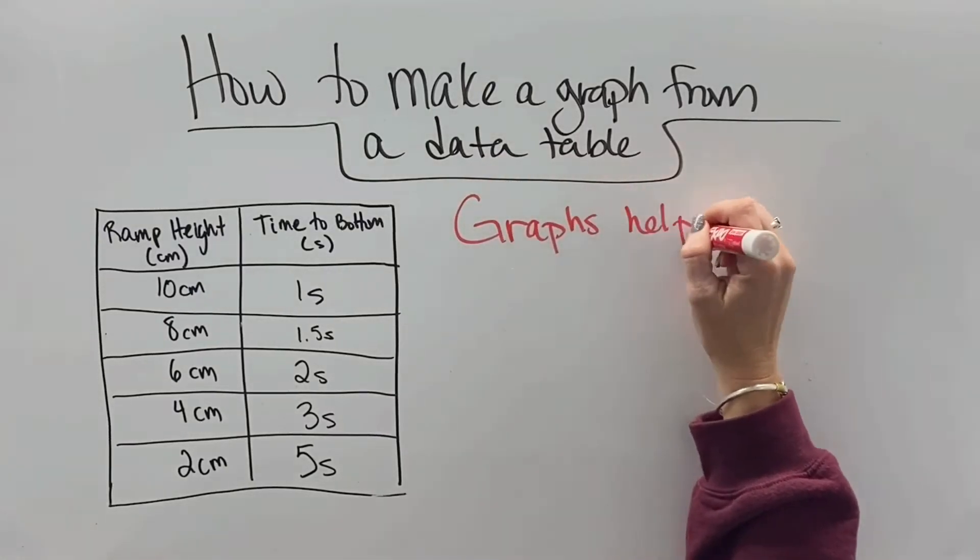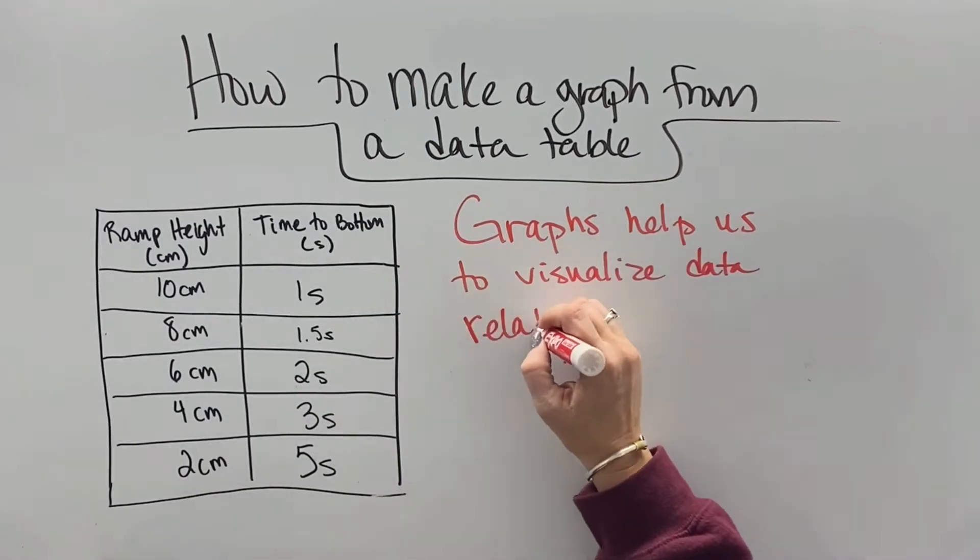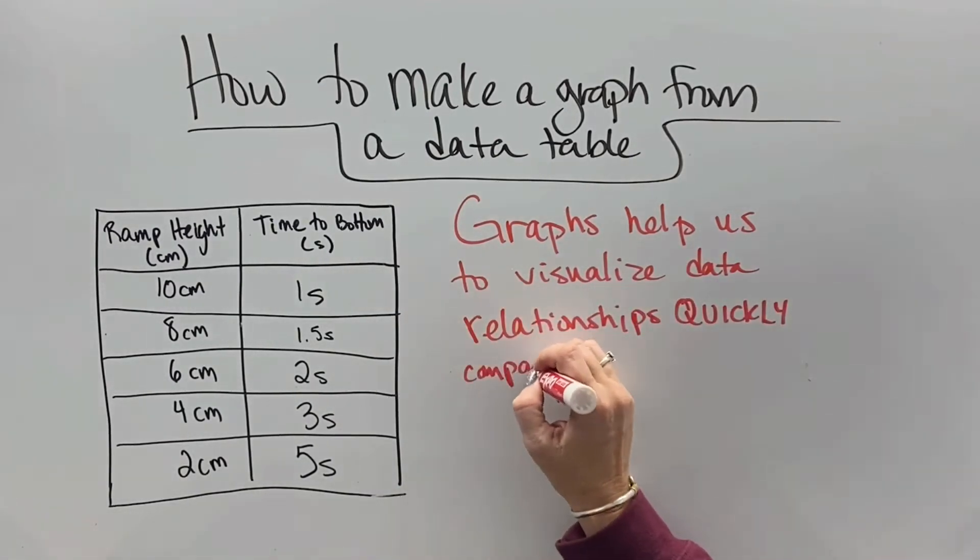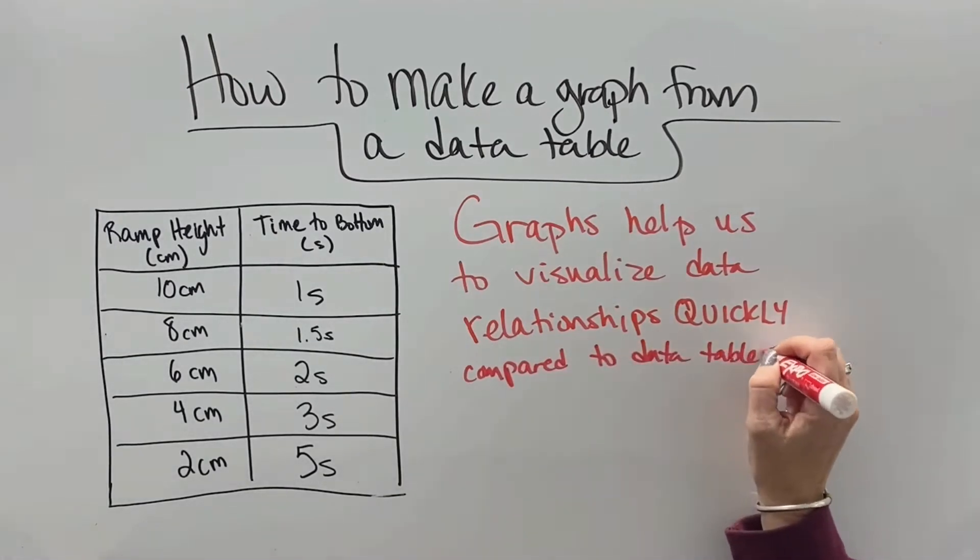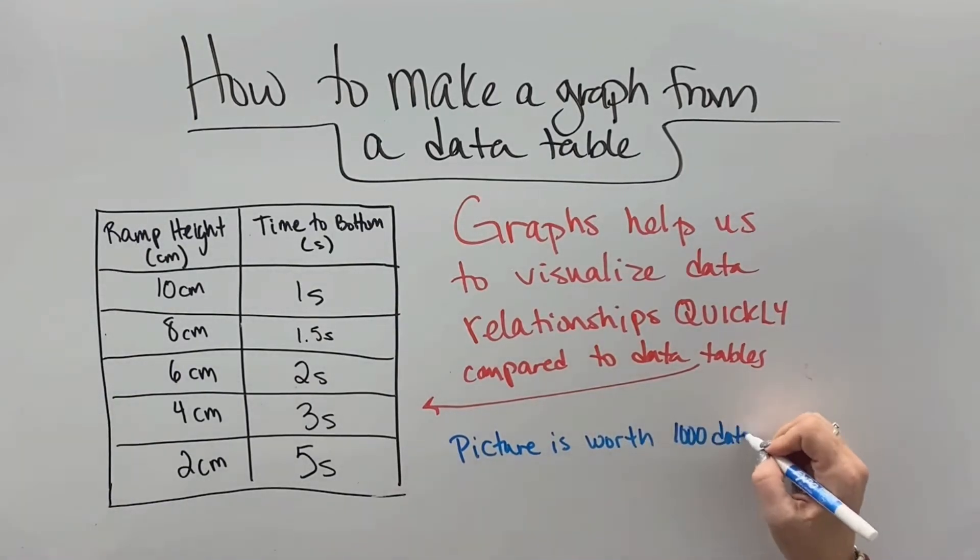Students often confuse graphs and data tables. The thing on the left is a data table and it tells us everything that we did in the experiment, point by point, what we did, what we measured. The graphs help us to quickly visualize the data relationships and they're pretty much like a picture of data, which is worth a thousand data points on a data table.